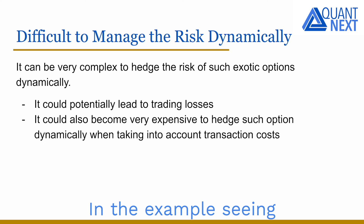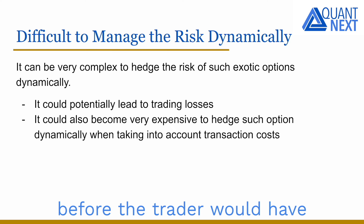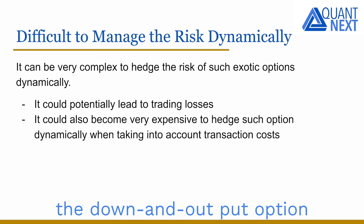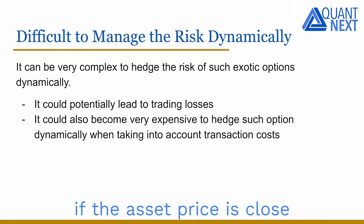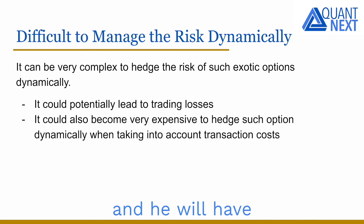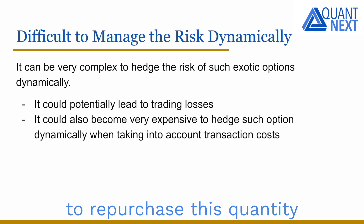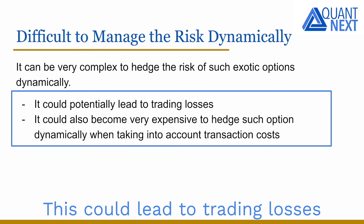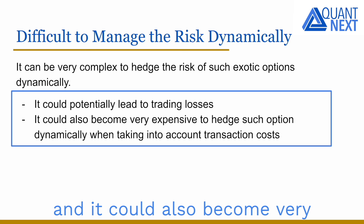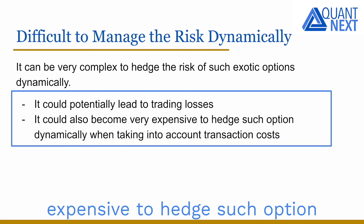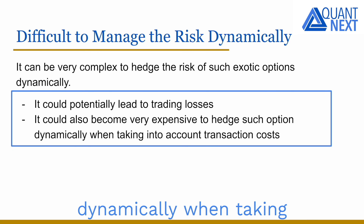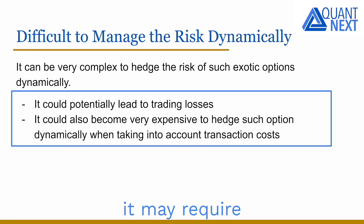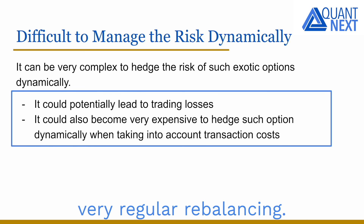In the example seen before, the trader would have to sell a very large number of stocks to delta hedge the down-and-out put option if the asset price is close to the barrier level, and would have to repurchase this quantity if the barrier is reached. This could lead to trading losses and it could also become very expensive to hedge such options dynamically when taking into account transaction costs, as there can be very important movements of the delta requiring very regular rebalancing.